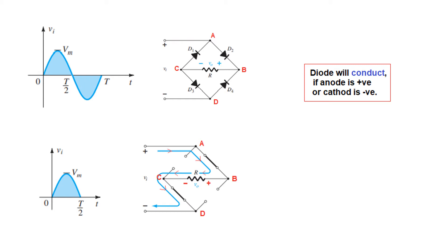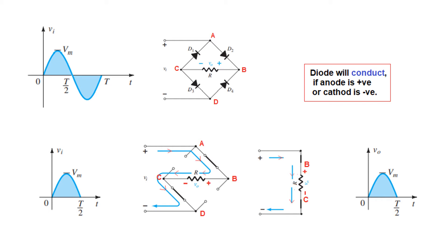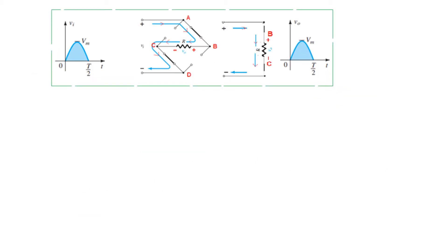Now let's follow the current path. Current starts from the positive terminal. The important point is that wherever the current touches the resistor terminal first, that terminal is marked positive. Since the current touches this terminal first, it is marked positive and the other negative. Redrawing — terminals A and B are the same so I write B, and C and D are the same so I write C. Applying Vm positive with one resistor, the output is also Vm positive. This is the output for the positive half cycle.